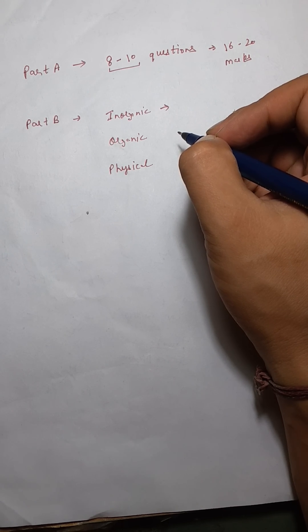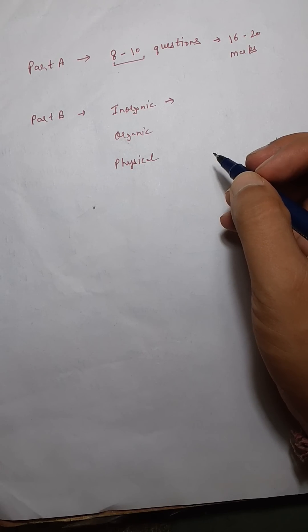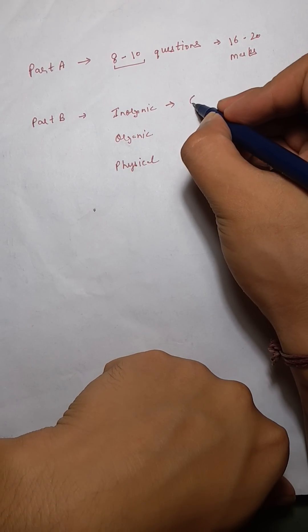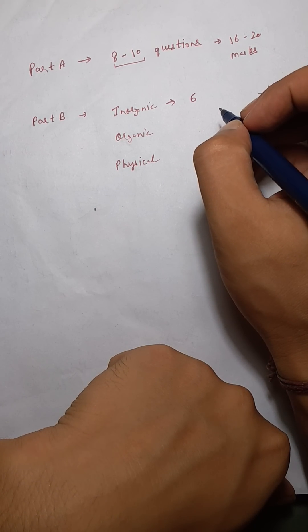Then one was on the acidity basically of the hydrogen. That question too was quite easy. And then there was one question on magic number. So we can say six questions could be easily attempted from the inorganic part.